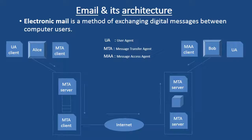Now when Alice needs to send a message to Bob, she invokes a user agent program, or the UA program, to prepare the message. After that, she uses another program called the message transfer agent, the MTA program, to send the message to the mail server at her site. The message received at Alice's site is queued with all other messages present. Her message then goes to the mail server at Bob's site.